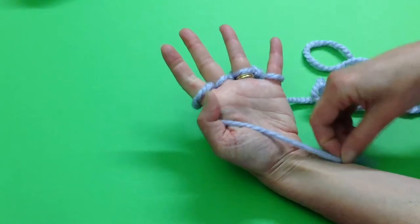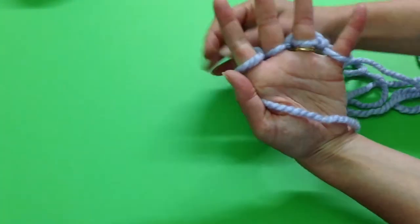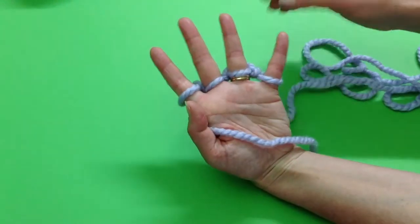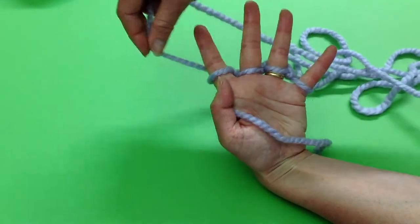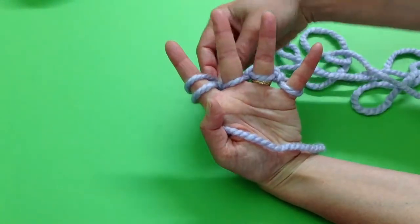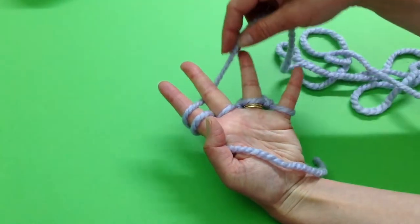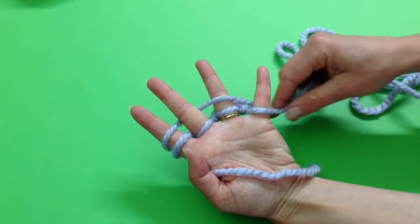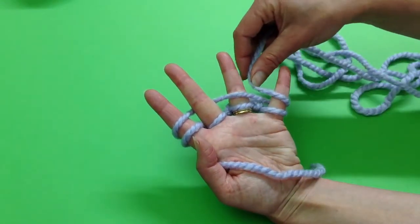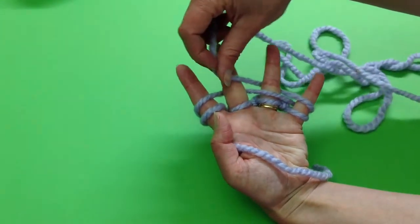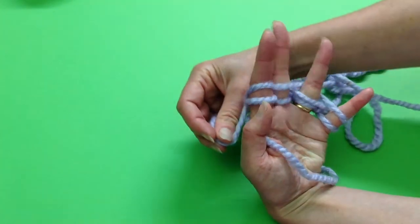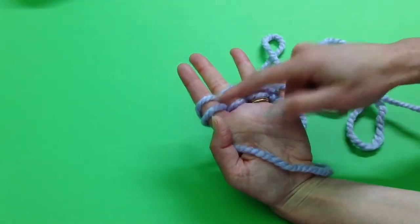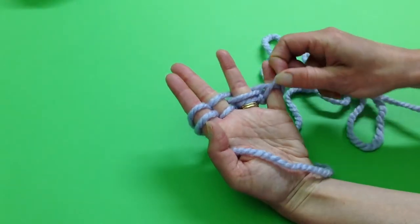Pull it tight on both ends of the string or wool, and then do it again: in front of your pointing finger, behind your tall finger, in front of your ring finger, and right around your pinky, behind and front. Let's see, we got two loops. We sure have, so we start again with our pinky.